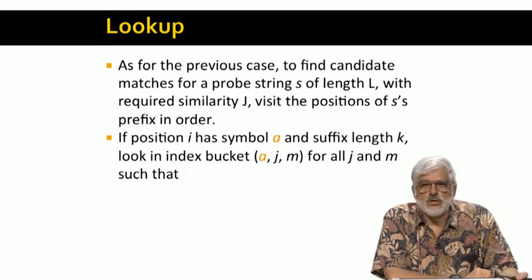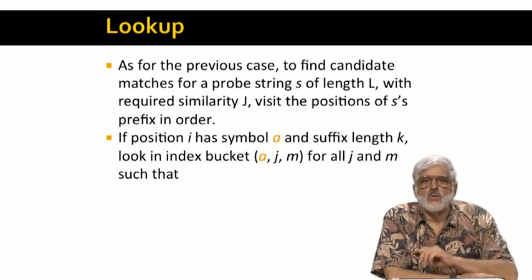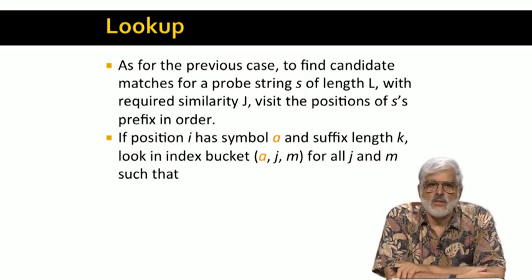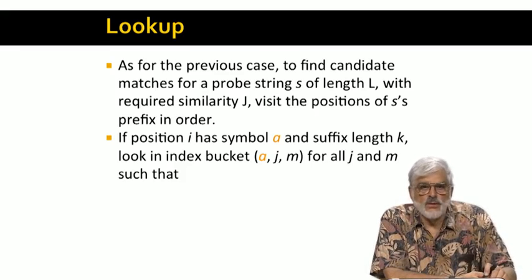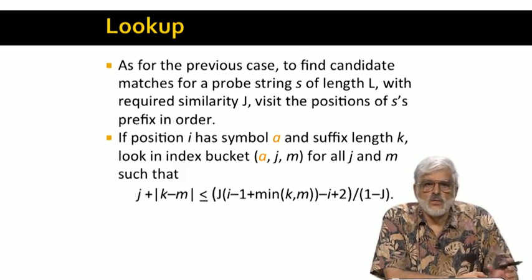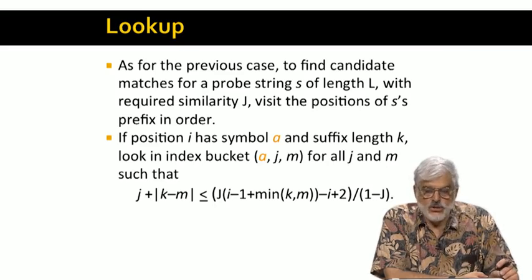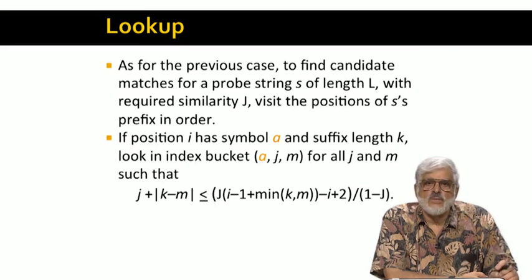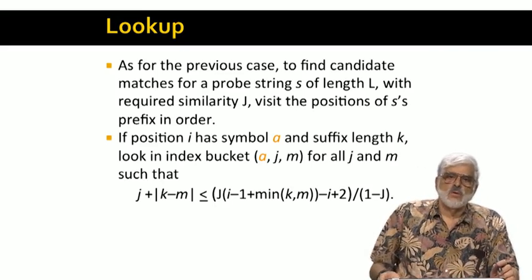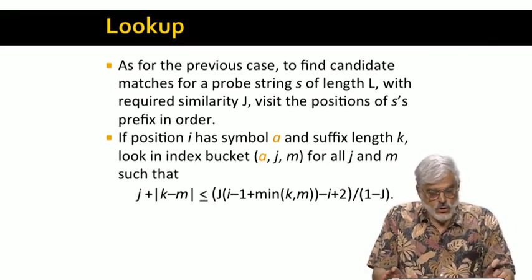Here's what we do for position I of S. First, suppose that position contains the symbol A. Also suppose that the suffix of S after position I has length K. And for certain values of J, the position in string T, and M, which is the suffix length of T after its Jth position, we must look in the bucket A, J, M if and only if the following inequality is satisfied. This is the inequality we derived a few slides ago. It gives us limits on J and M, since I, K, and the Jaccard distance capital J are already known. It's not all that easy to see what values of J and M satisfy this inequality, but there's actually a nice pattern, which we'll show you in a few slides.